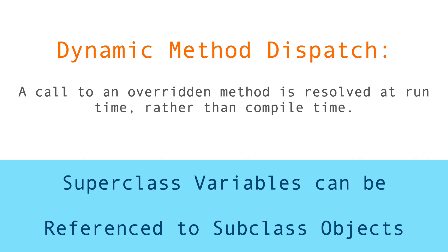Hello everyone. In this video we are going to discuss the concept called dynamic method dispatch. This is one of the concepts in Java which comes under the category of inheritance. Java is an object-oriented programming language and the three main concepts in object-oriented programming are encapsulation, polymorphism, and inheritance. Dynamic method dispatch comes under the category of inheritance and one of the important concepts in inheritance is method overriding.